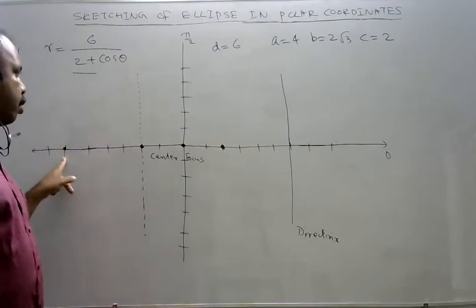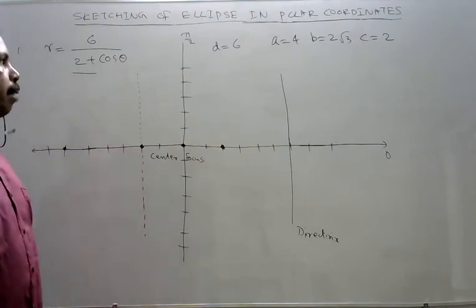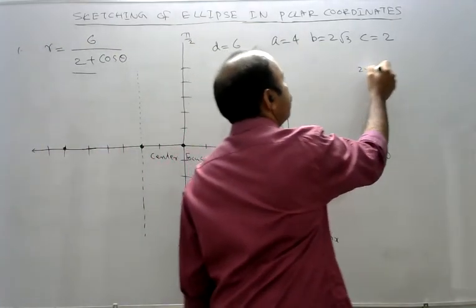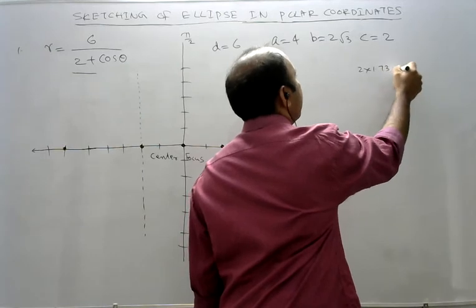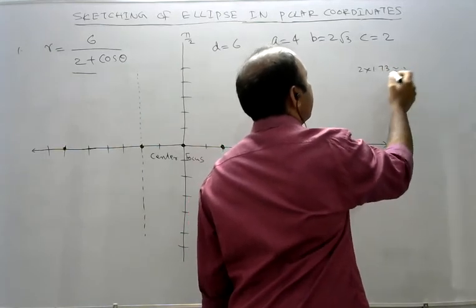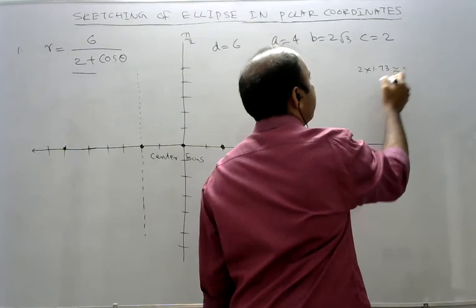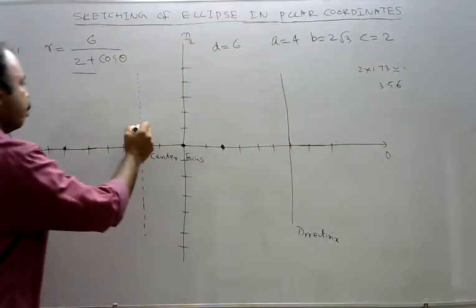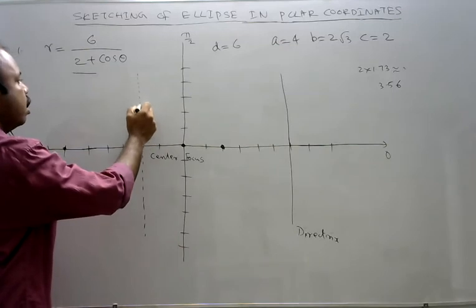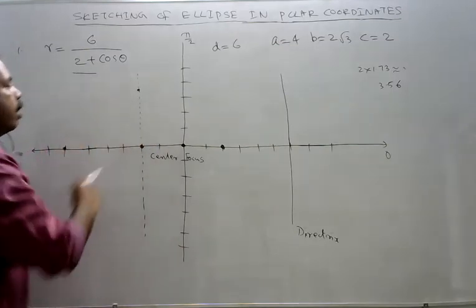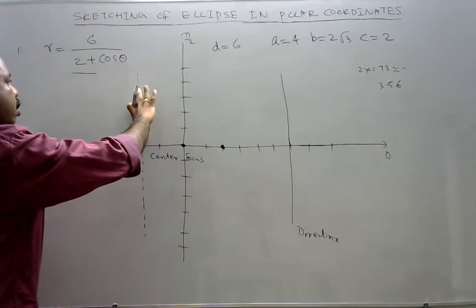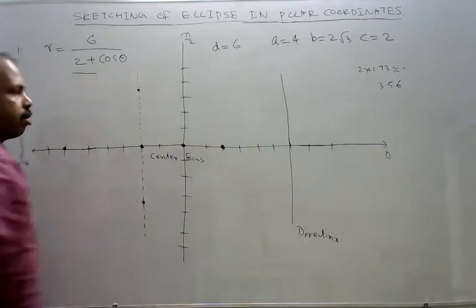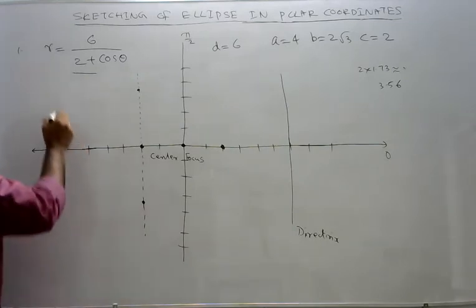This is B. B is 2 root 3, which is approximately 2 into 1.73, approximately more than 3 point, approximately 3.46. So more like 3.46: 1, 2, 3, 3.46. Almost here. So we draw the box.